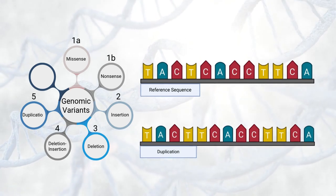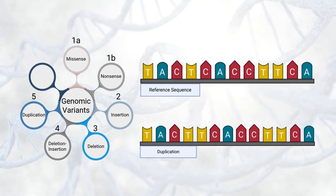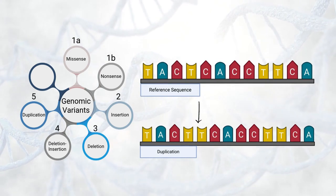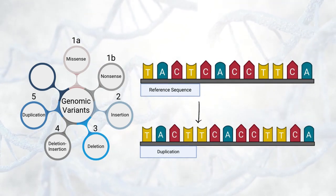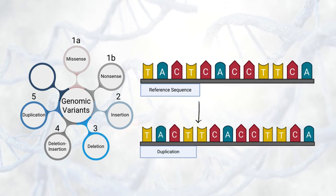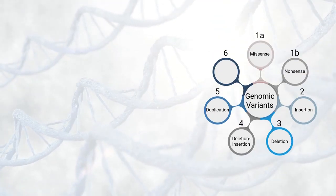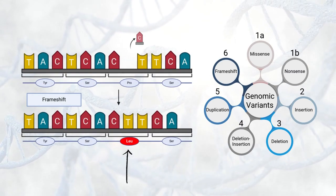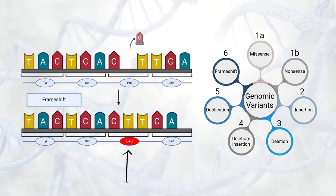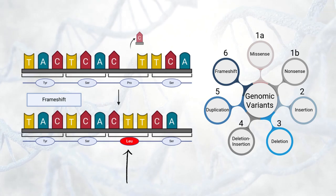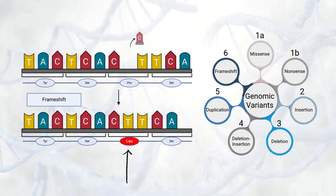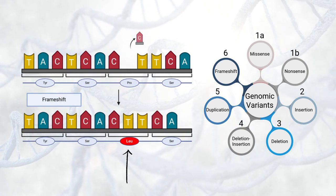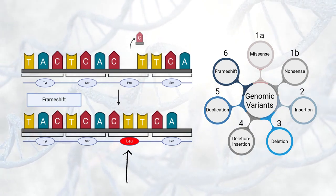Fifth is a duplication, where a stretch of one or more nucleotides gets repeated immediately beside the original genetic sequence. Finally, when a variant causes a change in the reading frame of the nucleotides, it is called a frameshift variant. This can happen with insertions, deletions, or duplications that are not in groups of three nucleotides.